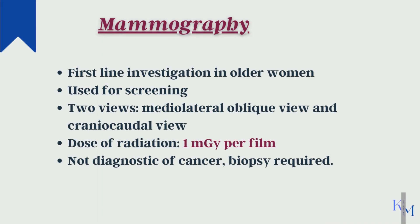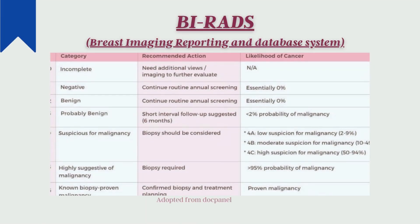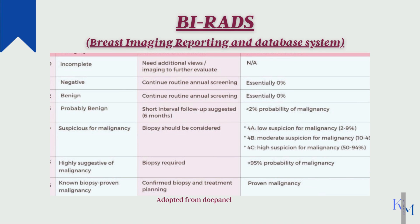Mammogram is preferred in older women presenting with breast disease. Two planes are visualized: the mediolateral oblique view and the craniocaudal view. The dose of radiation per film is 1 mGy. It is also used as a screening test in asymptomatic women. Findings are not diagnostic of cancer, so we always do a biopsy for a definitive diagnosis in cases with BIRADS score 4 or 5. BIRADS class 1 and 2 show no suspicion of malignancy and only routine mammography is advised. BIRADS 3 indicates low suspicion and a 6-month follow-up is advised — fibroadenomas fall in BIRADS 3. BIRADS 4 and 5 are suspicious and biopsy is advised in all cases.